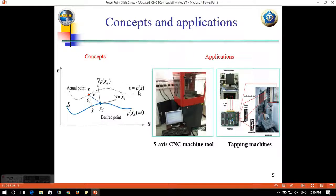And come to applications of ILC and equivalent control error model. For that concept, we can use in the industry for the contouring control of 5-axis CNC machine tool and for the tapping machine. We use ILC and equivalent control error for synchronizing the speed between the Z-axis and spindle.